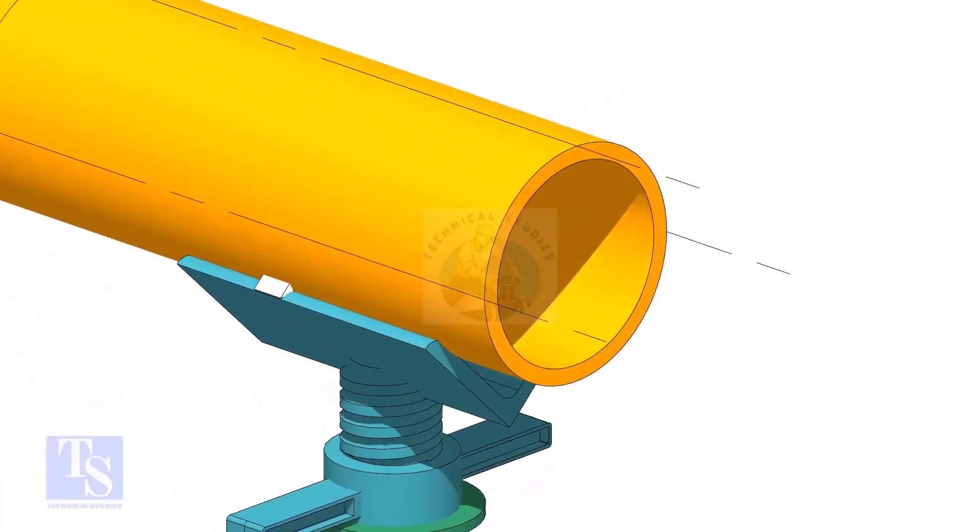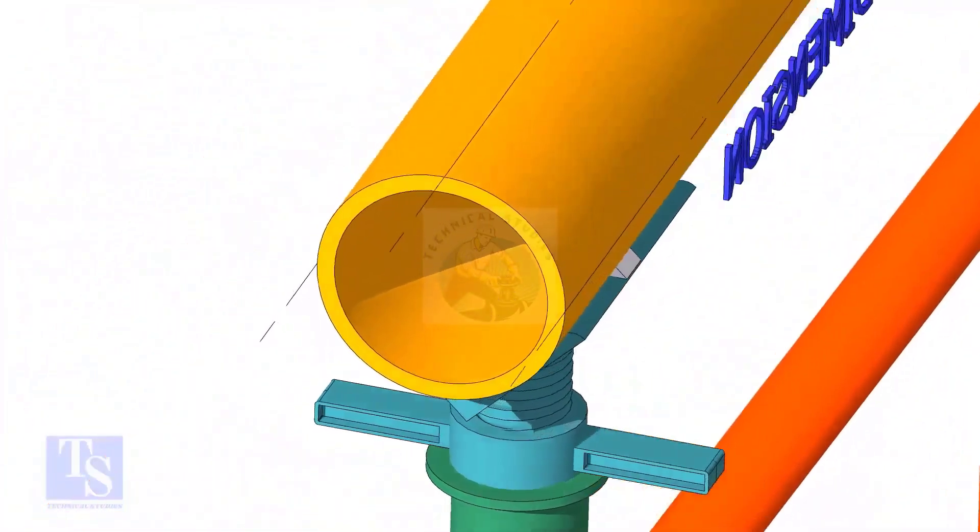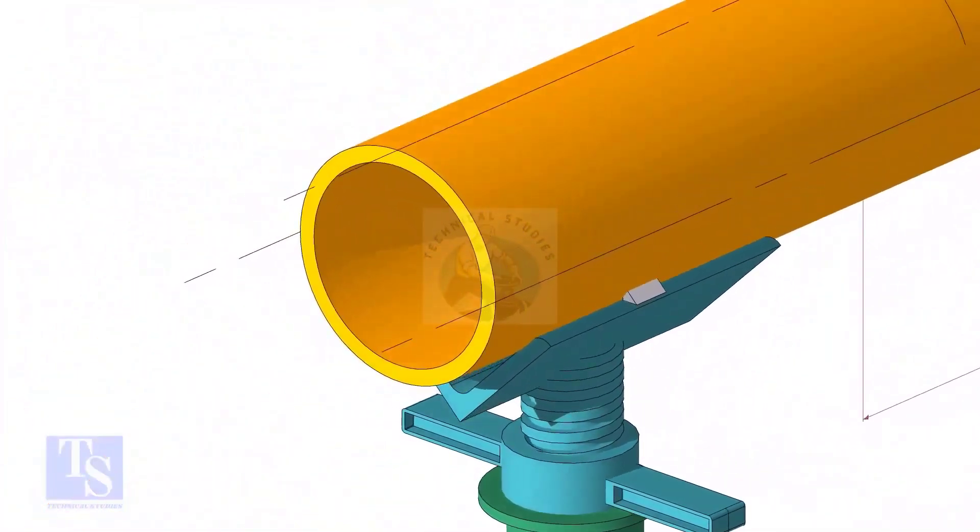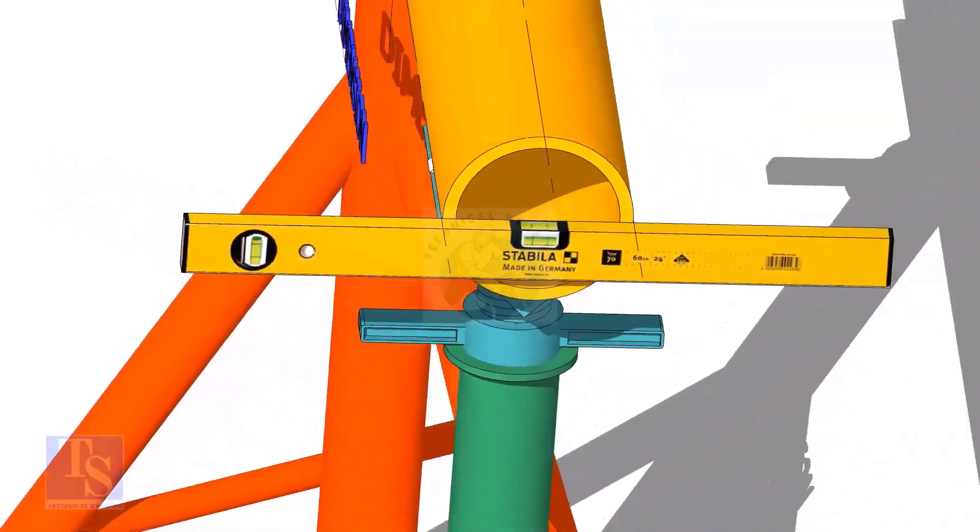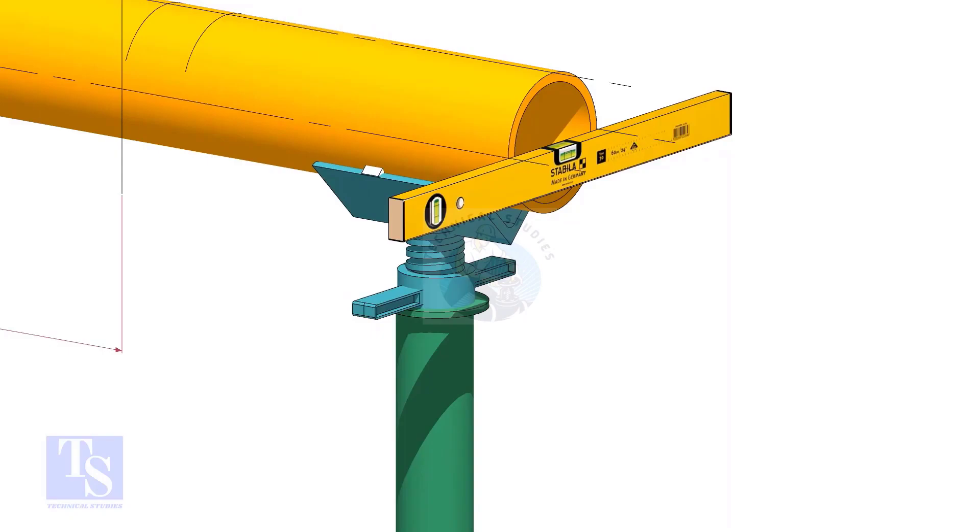After leveling the pipe, mark the center line and two quarter lines. Arrest the pipe if required and make small tack welds.